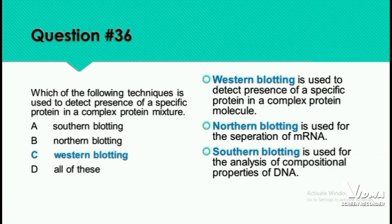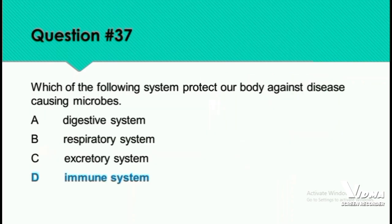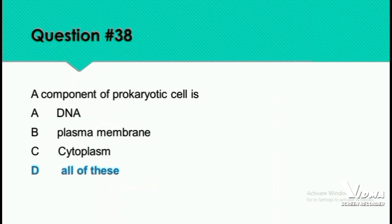Question 36: The technique used to detect the presence of a specific protein in a complex protein mixture is Western blotting. Question 37: Which system protects our body against disease-causing microbes? The digestive system handles digestion, the respiratory system handles respiration, the excretory system handles waste removal, and the immune system provides immunity and protects us against disease-causing microbes. Question 38: Components of a prokaryotic cell include DNA, plasma membrane, and cytoplasm — option D is correct.